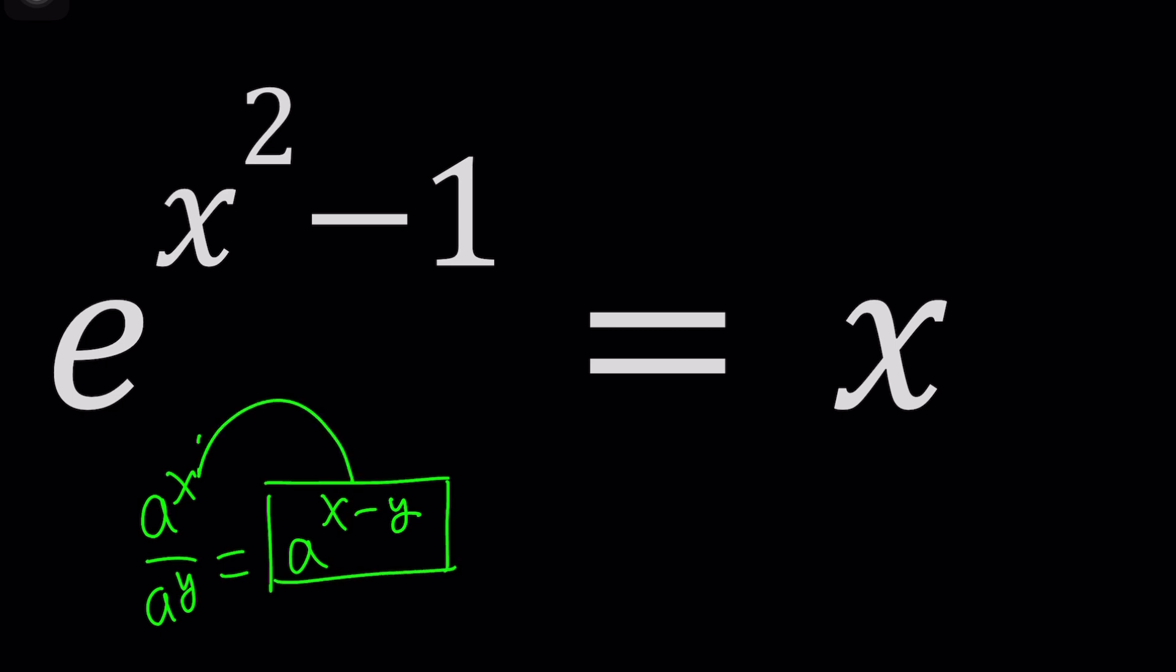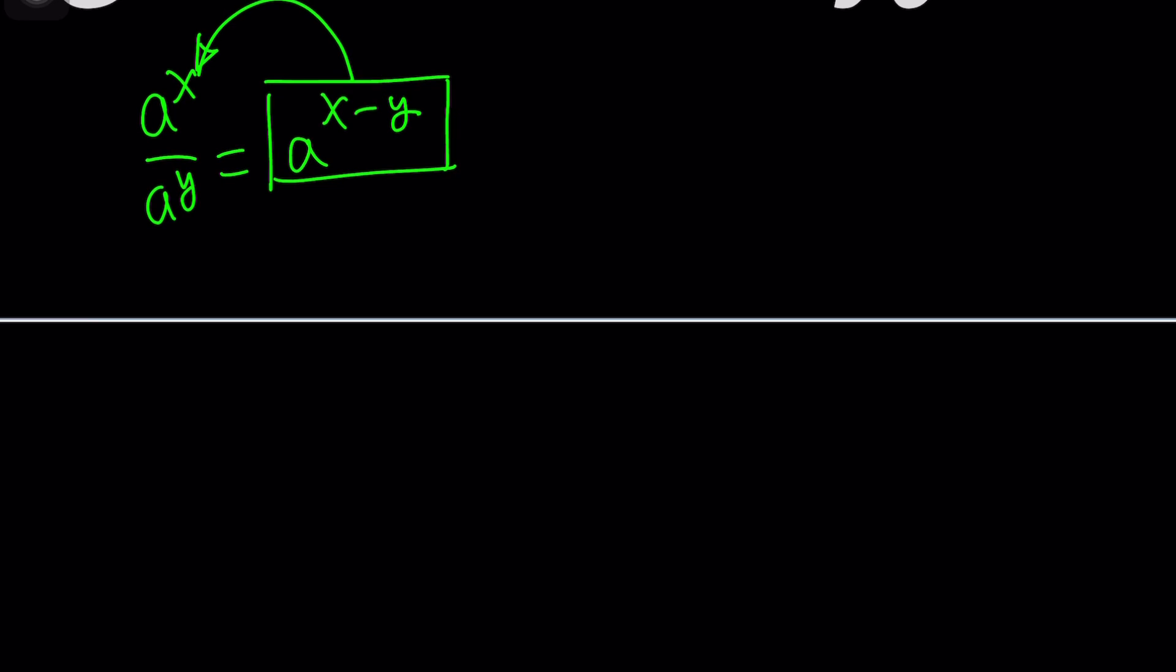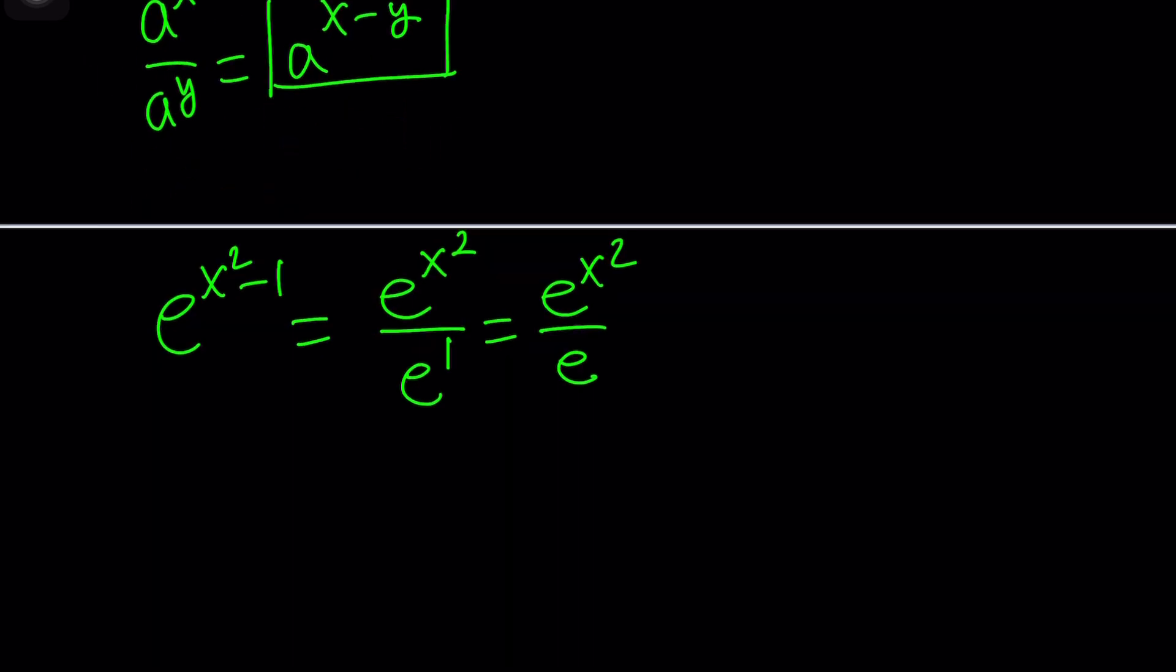So whenever you see something like this you should immediately think about division. So e to the power x squared minus 1 can be written as e to the power x squared divided by e to the power 1 which is the same as e. Okay, so we can kind of write it as e to the power x squared divided by e and that should equal x.